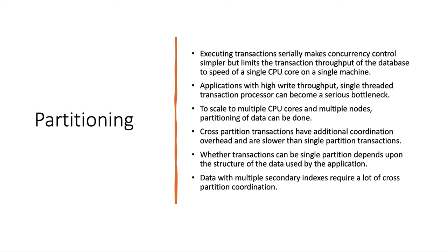To scale those transactions, we can partition the data and allocate each CPU core to one partition, allowing linear scaling with the number of CPU cores. However, transactions that need to access multiple partitions require the database to coordinate across all touched partitions. Cross-partition transactions have additional coordination overhead and are generally slower than single-partition transactions. Whether a transaction is single-partition or cross-partition depends on how your data is structured and how it is used by the application. Databases with multiple secondary indexes require a lot of cross-partition coordination and can experience performance degradation.